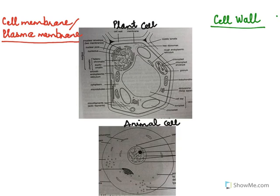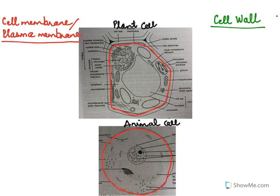Here we learn the difference between cell membrane and cell wall. Here are two cells — a plant cell and below is the animal cell. The outer membrane of the animal cell is called the cell membrane, and it's just a thin, flexible membrane. This thin, flexible membrane is also present in the plant cell. So the cell membrane is present in both plant and animal cells.